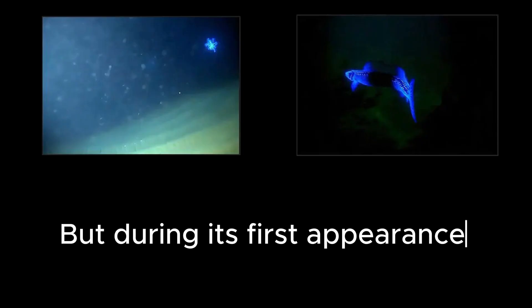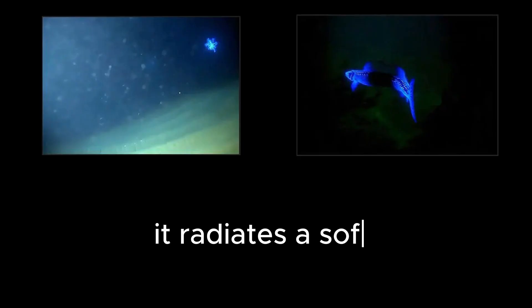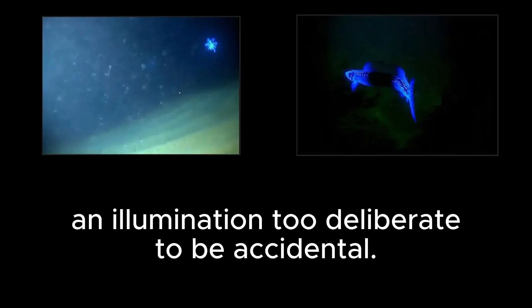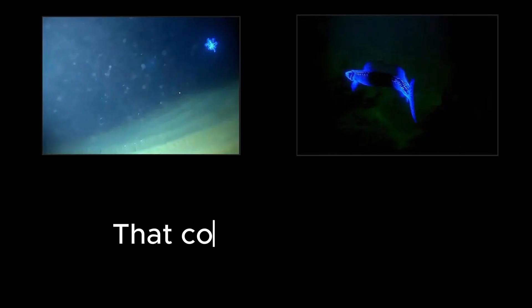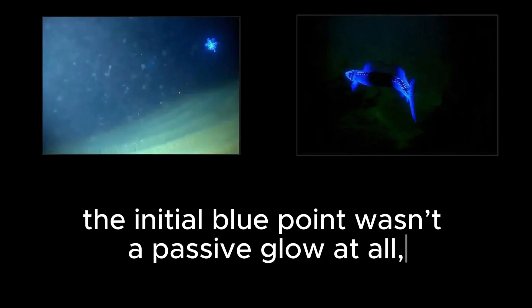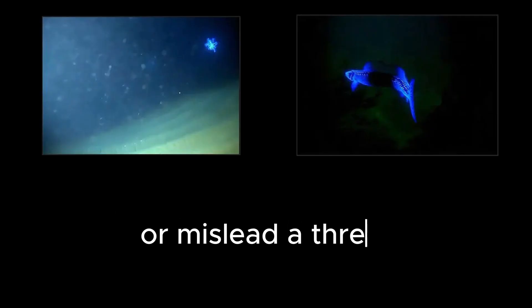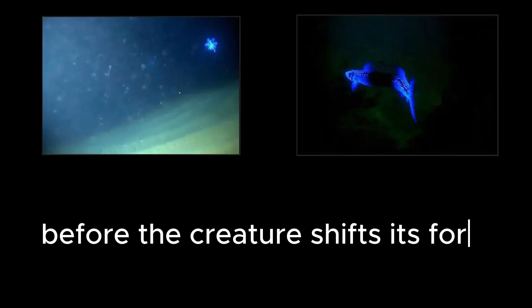But during its first appearance, it radiates a soft, almost alluring blue, an illumination too deliberate to be accidental. That contrast suggests the initial blue point wasn't a passive glow at all, but a lure, a fabricated signal designed to draw in smaller prey or mislead a threat before the creature shifts its form.